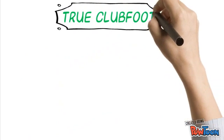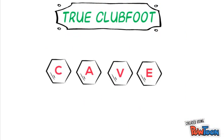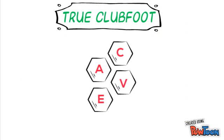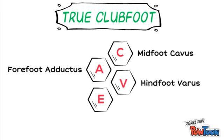CAVE is a simple mnemonic that can be used to remember the four individual deformities which make up a clubfoot. C is for cavus, or increased arch of the midfoot. A is for adduction of the forefoot. V is for varus of the hindfoot. And E is for equinus, or increased plantar flexion of the hindfoot.